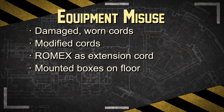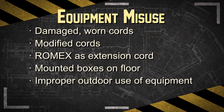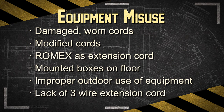Additional examples of misuse include using junction boxes designed to be mounted with a power cord and placing them on the floor, using electrical equipment outdoors that is only designed for use indoors, and not using three-wire extension cords designed for hard or junior hard service, which are typical for construction usage.